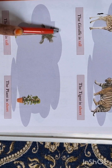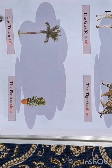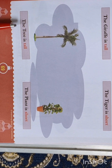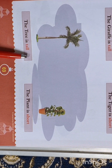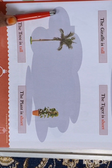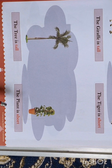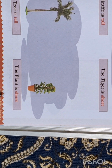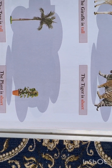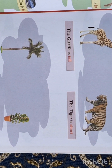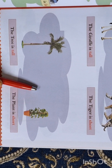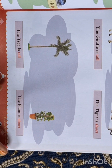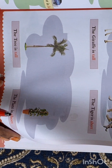Which tree can you see here? Coconut tree. Coconut trees are very tall. And plants are short. Plants we grow in our home.